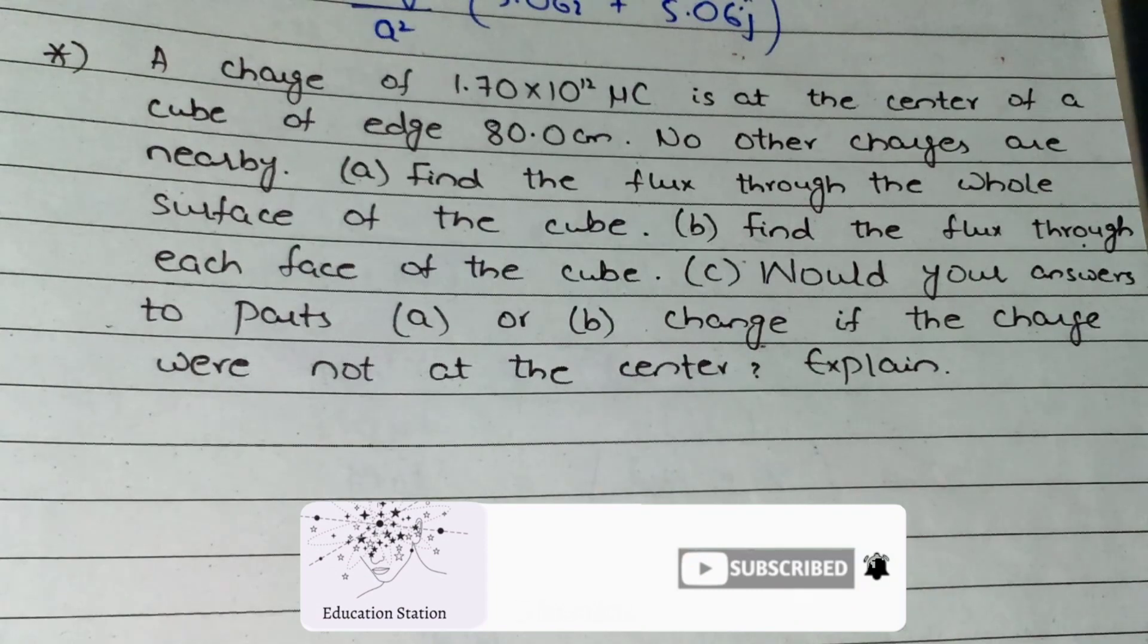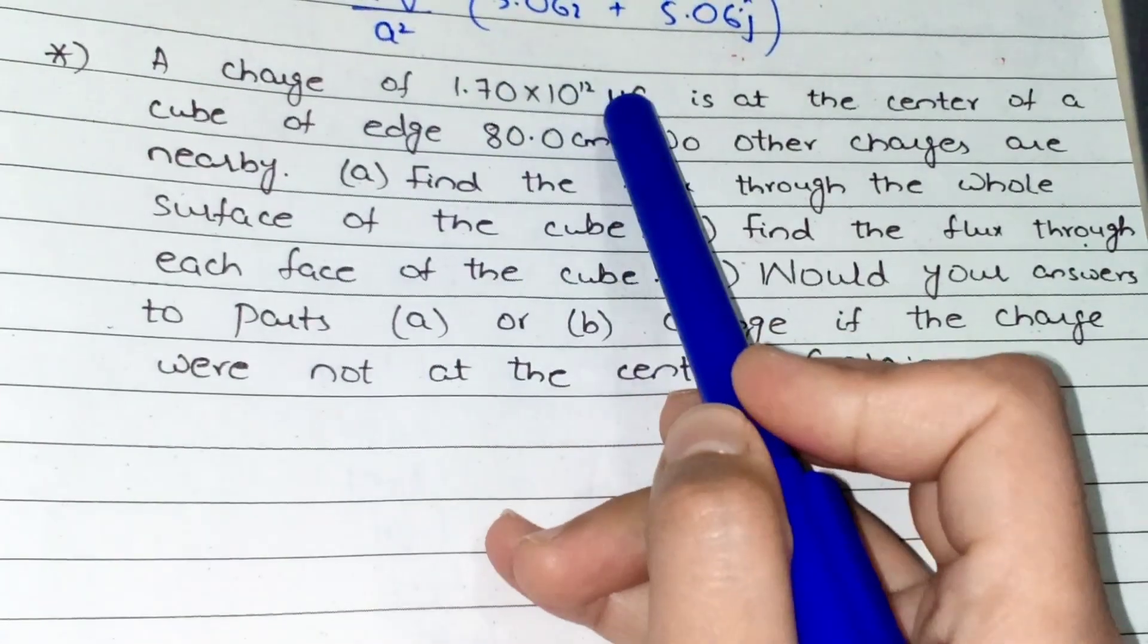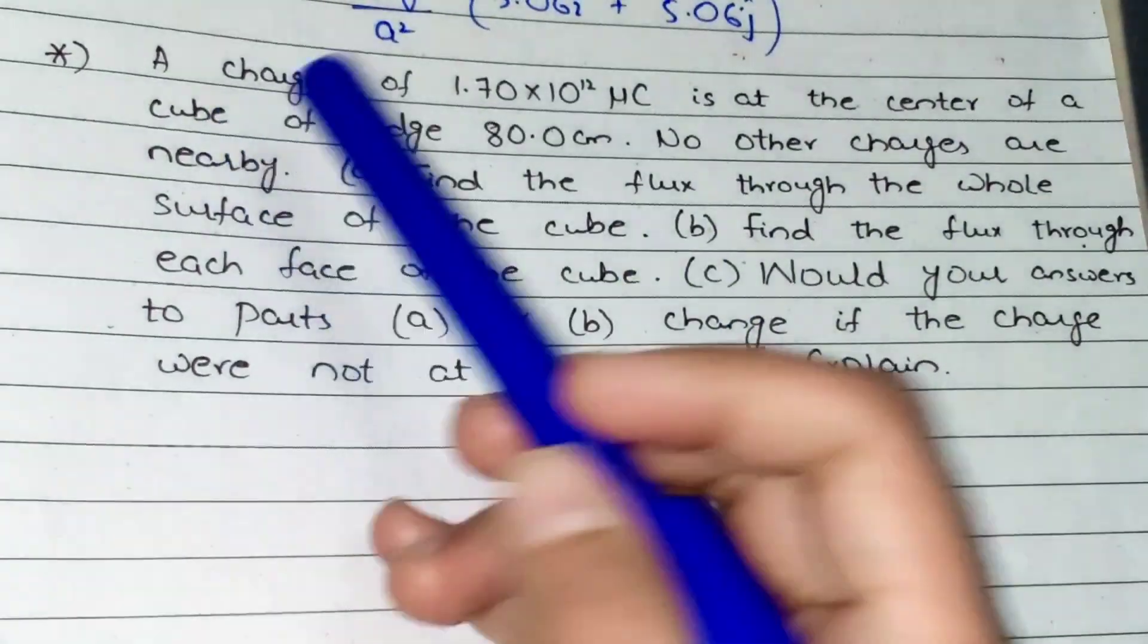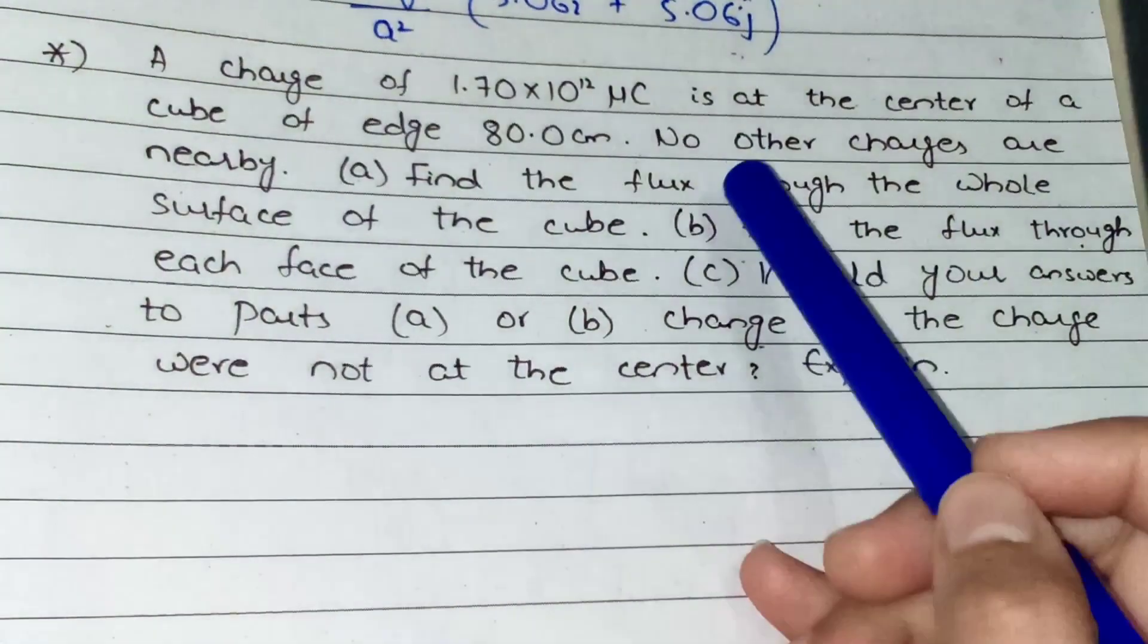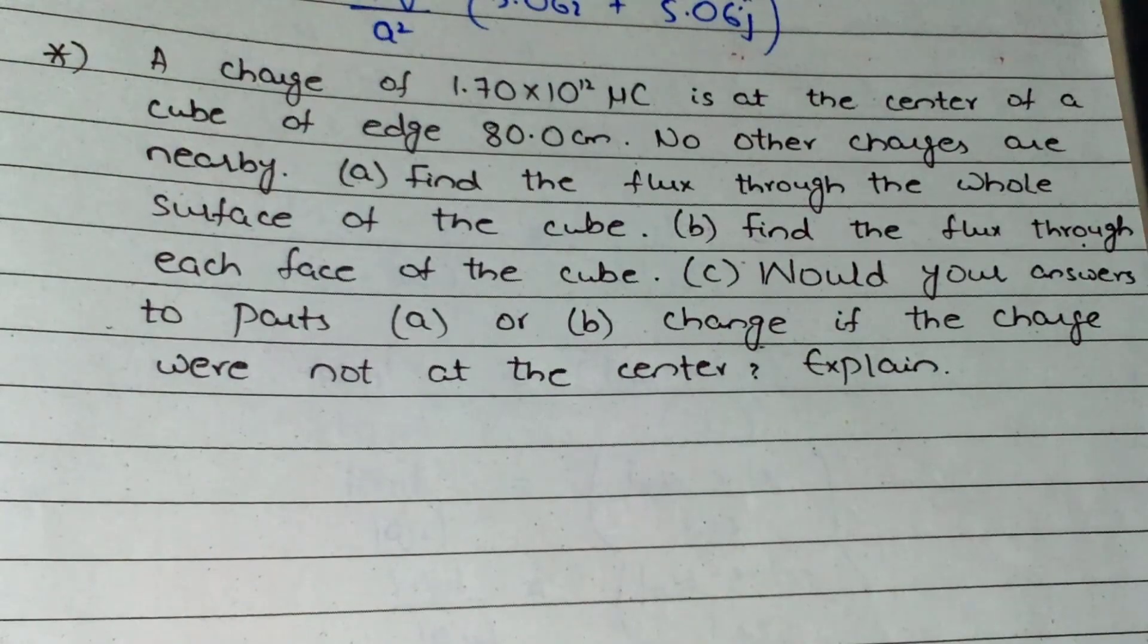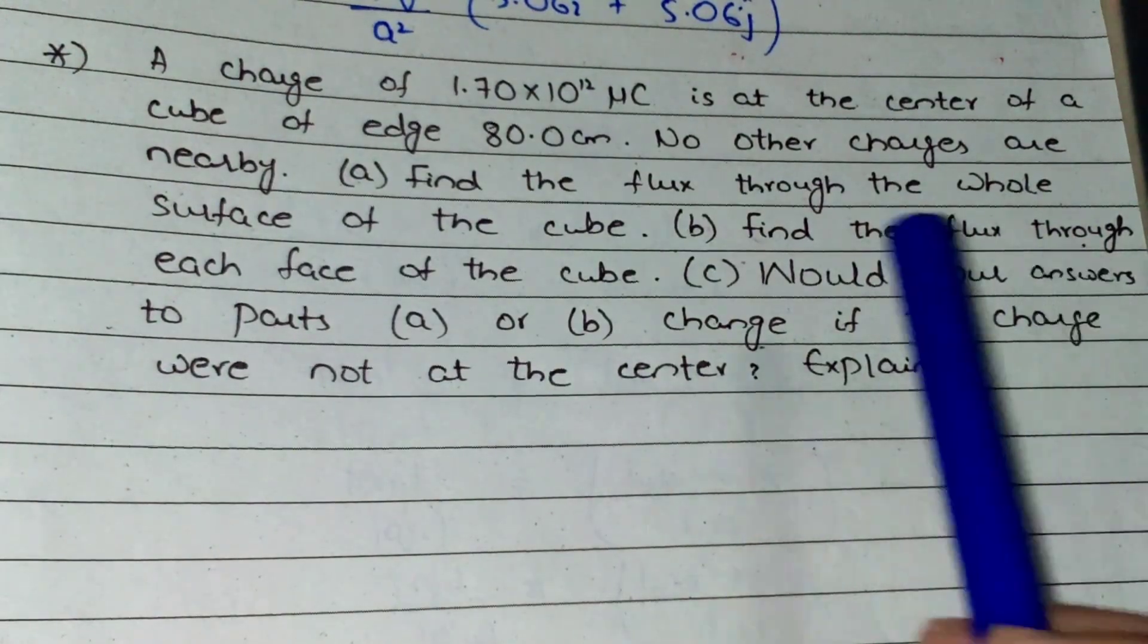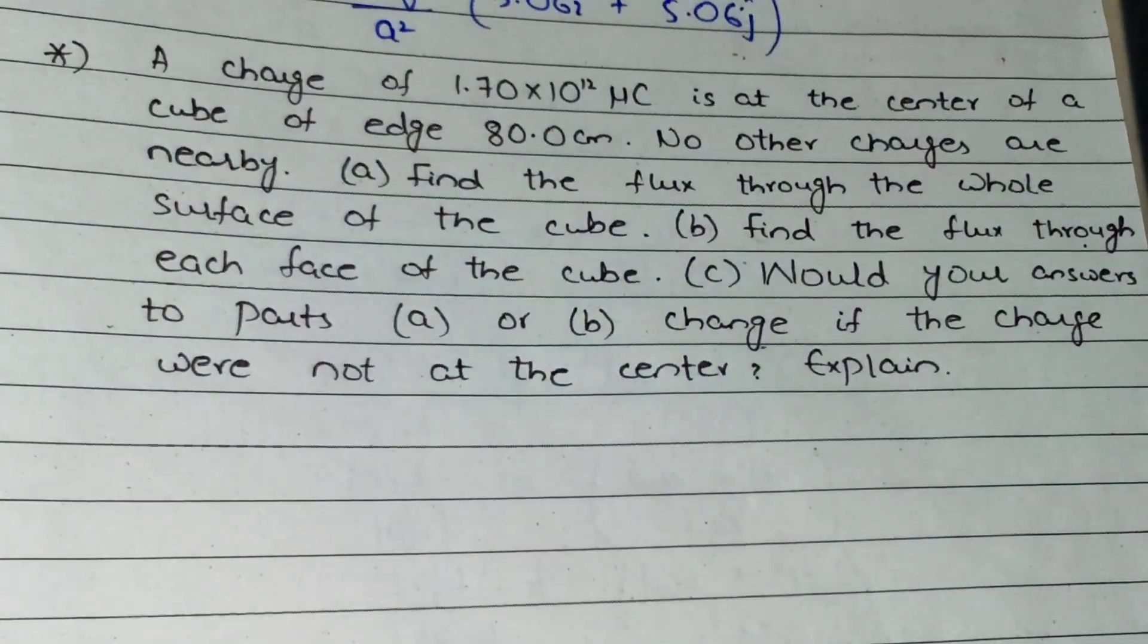This is the question for today's lecture video. We have a charge with a given magnitude at the center of a cube. There is only one charge in the cube. There are three parts to this question. In part A, I have to find the total flux through the whole surface of the cube.